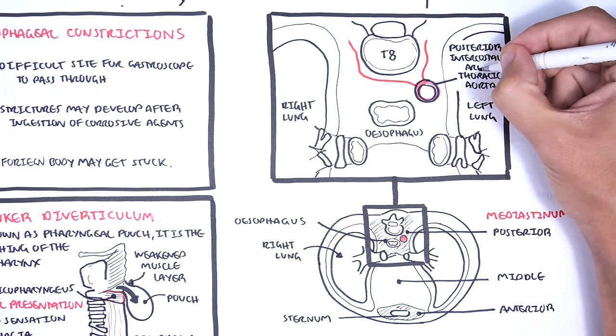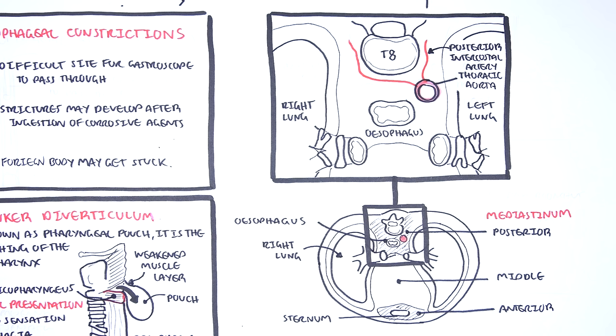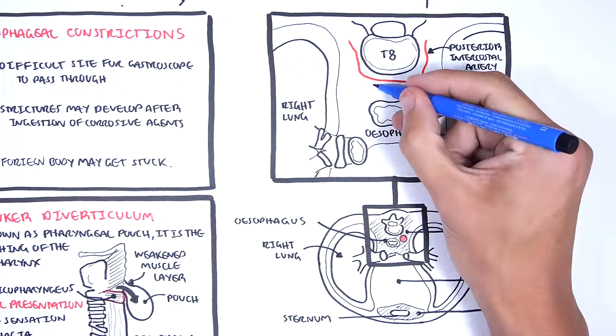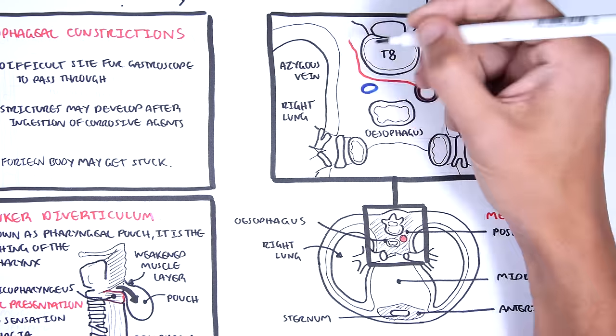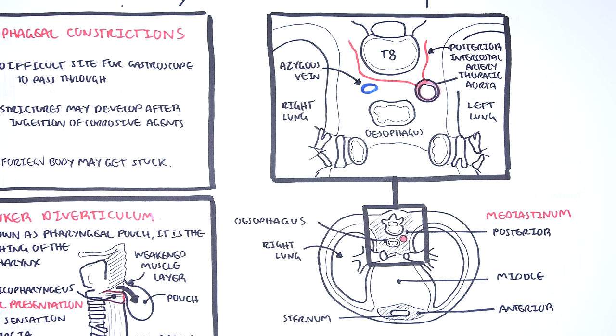The thoracic aorta will have branches called the posterior intercostal arteries coming off that will supply the ribs and the spinal cord.